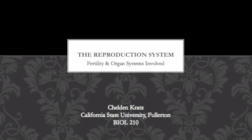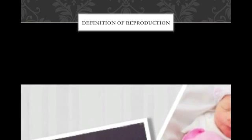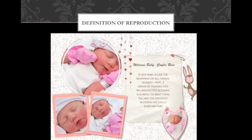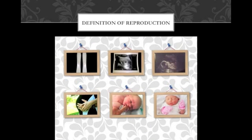My name is Sheldon Kratz from Cal State University Fullerton and this video is on the reproductive system regarding fertility and the organ systems involved. Reproduction can be defined as the action or process of making a copy of something. For the purpose of this presentation, taking a boy and a girl and creating a mini version of both of them, a baby, through the fusion of reproductive cells — one cell from a male and one cell from a female. Before we can get a baby or even a pregnancy, we need to understand the process of reproduction and the organ systems it includes.